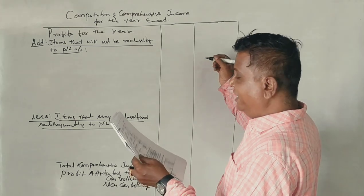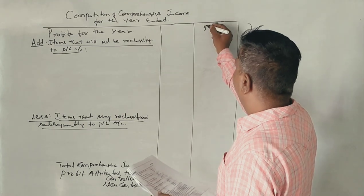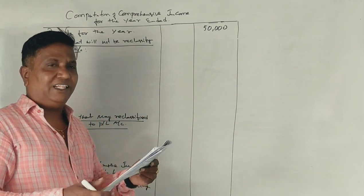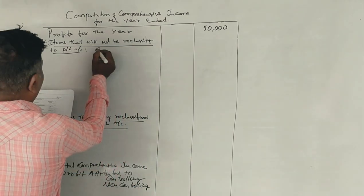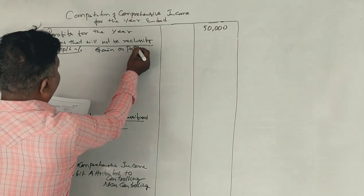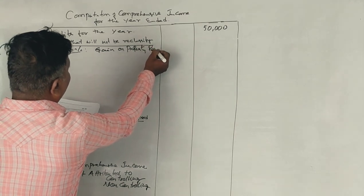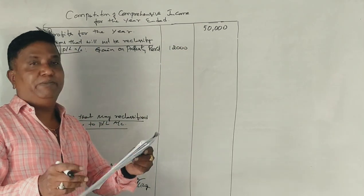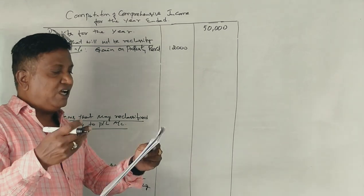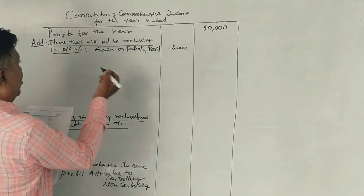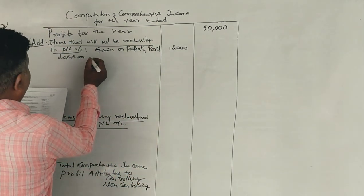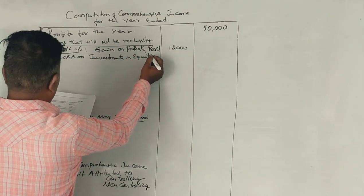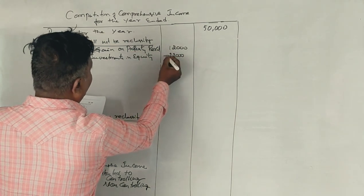First of all, profit for the year is 50,000 — that is 50,000 rupees. Next, gain on property revaluation. Then loss on investment in equity instruments — that is a loss, so a minus value is required. The value is 22,000.